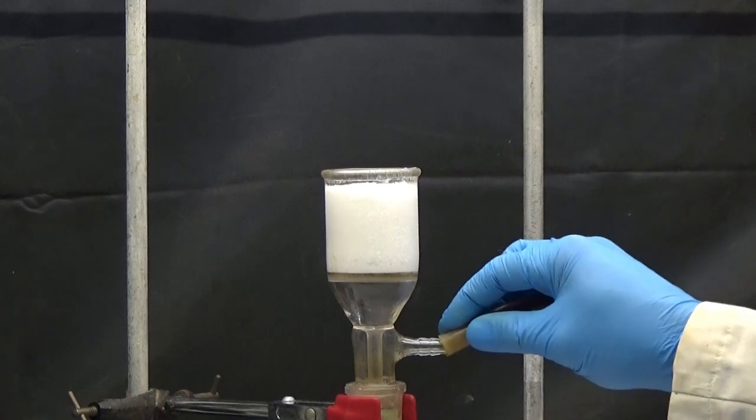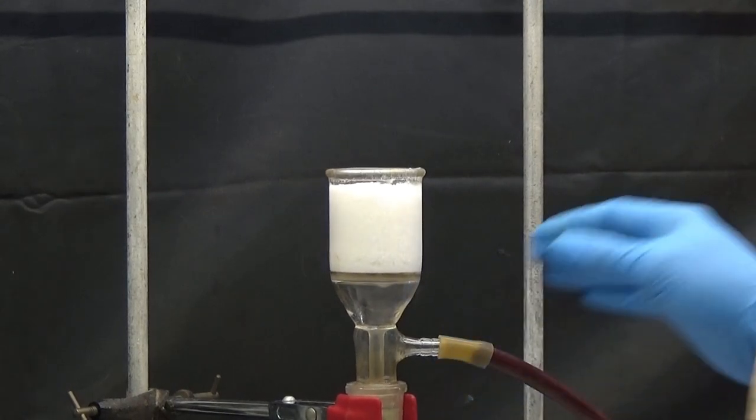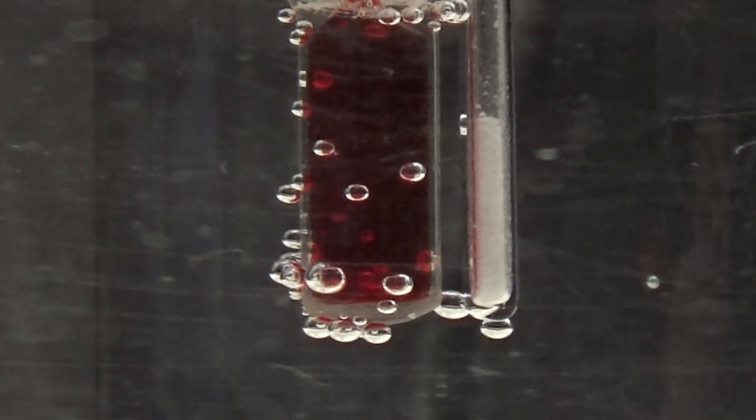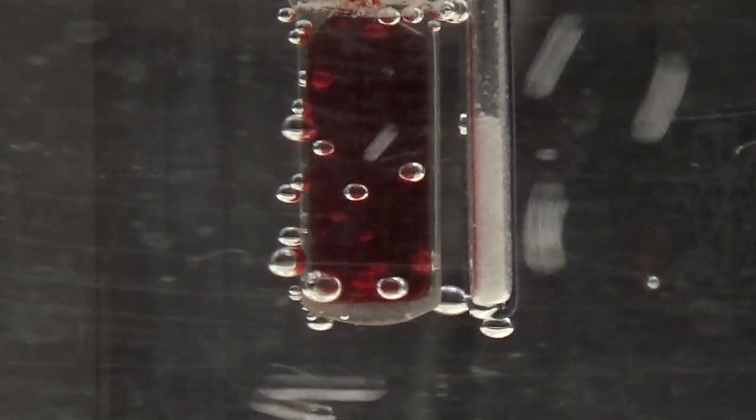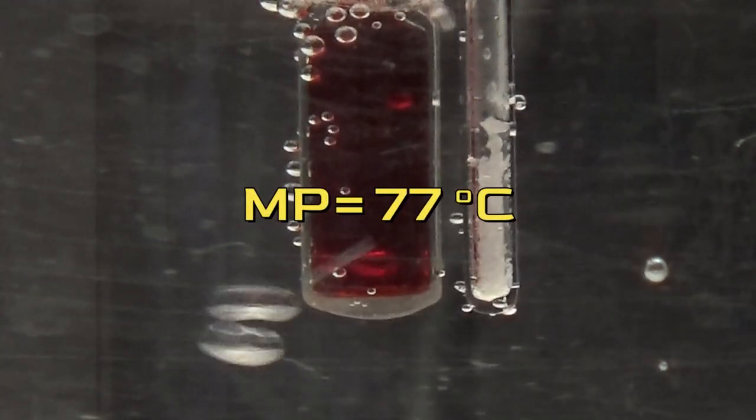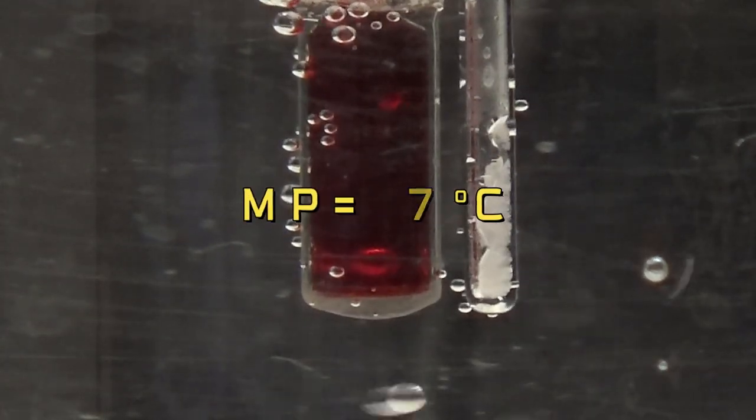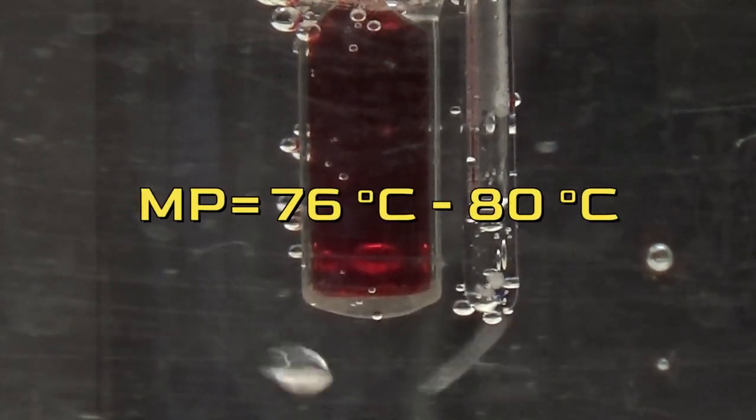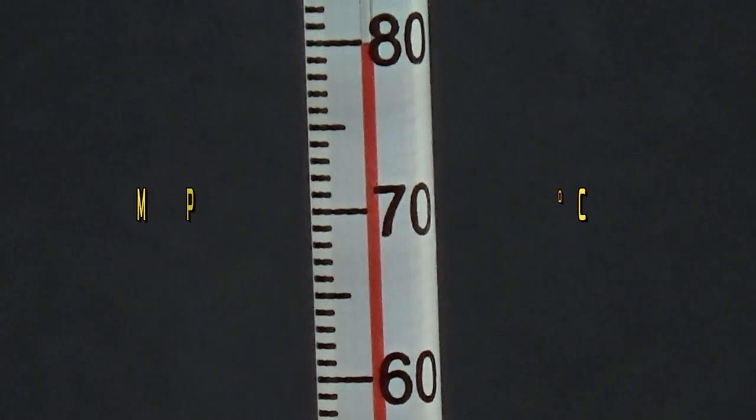Dry in a desiccator for 24 hours. When dry, the melting point is determined. The theoretical melting point of phenylacetic acid is 77 degrees. In our test, a melting point between 76 and 80 degrees was obtained.